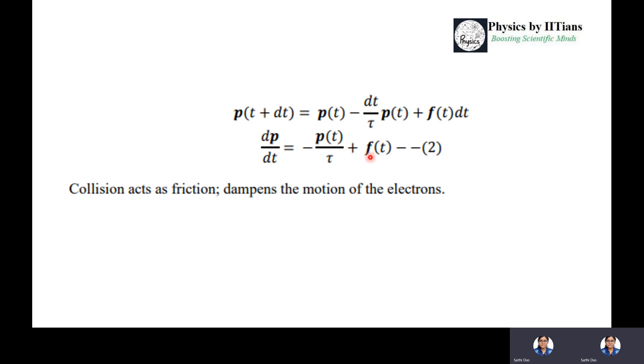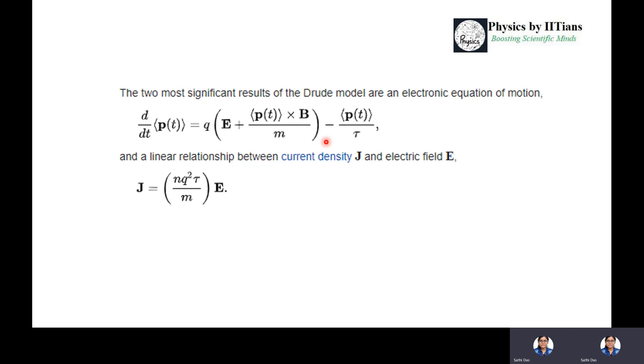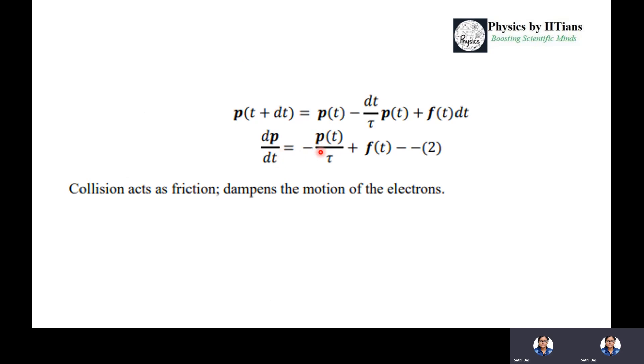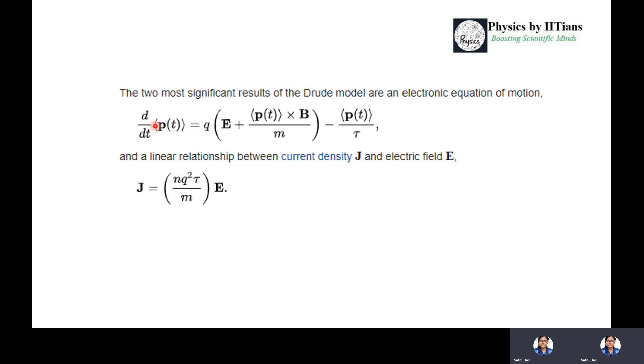F(t) is the external or Coulombic force. Writing dp/dt in terms of this expression, we get d⟨p(t)⟩/dt = q(E + ⟨p(t)⟩ × B) - ⟨p(t)⟩/τ. The other relationship we already got is between current density j and electric field E: j = σE where σ = nq²τ/m. These are the two most significant results of the Drude model for electron equation of motion inside a metal.